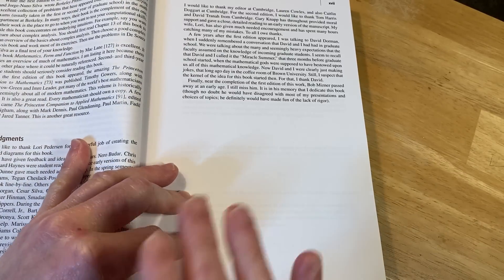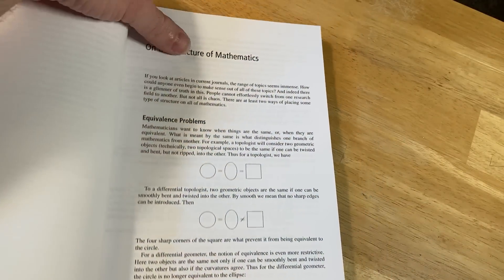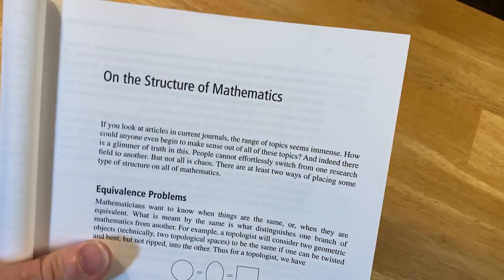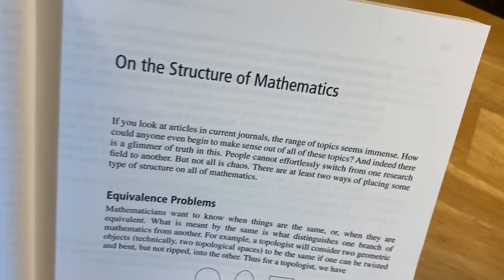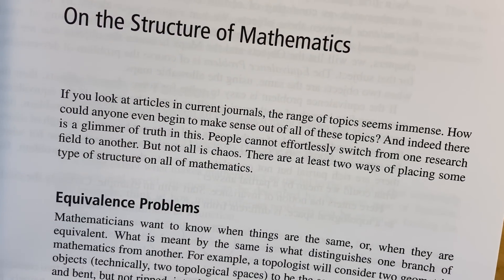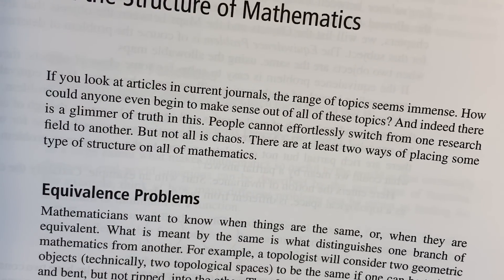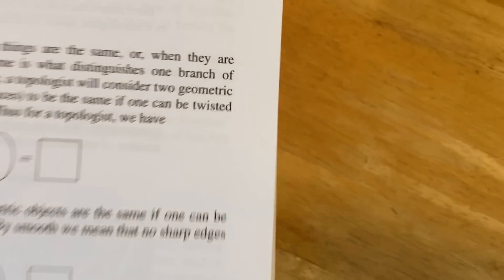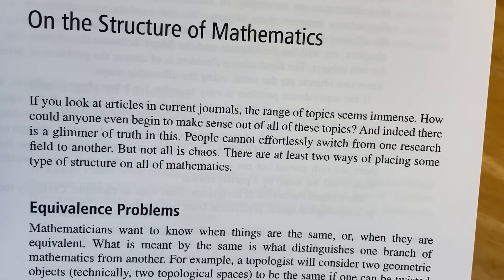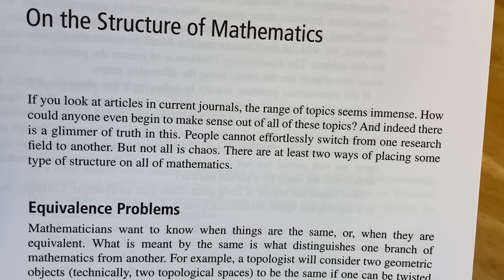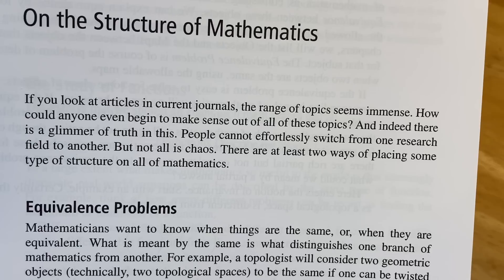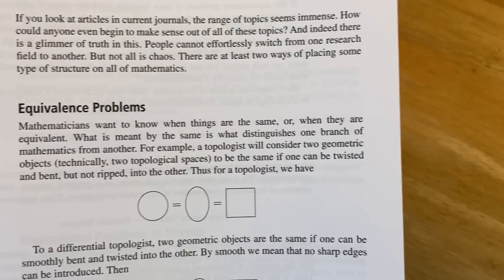I'll leave a link in the description, by the way, in case you want to check out this book. It is awesome. So this is really cool, too. This book has a lot of cool stuff. So there's something else later that's also really cool that I'll show you. But look at this. This is on the structure of math. If you look at articles in current journals, the range of topics seems immense. How could anyone even begin... Sorry, I got to give it a whiff. Ah, amazing. To make sense out of all of these topics. And indeed, there is a glimmer of truth in this. People cannot effortlessly switch from one research field to another. But not all is chaos. There are at least two ways of placing some type of structure on all of math. So I love this.